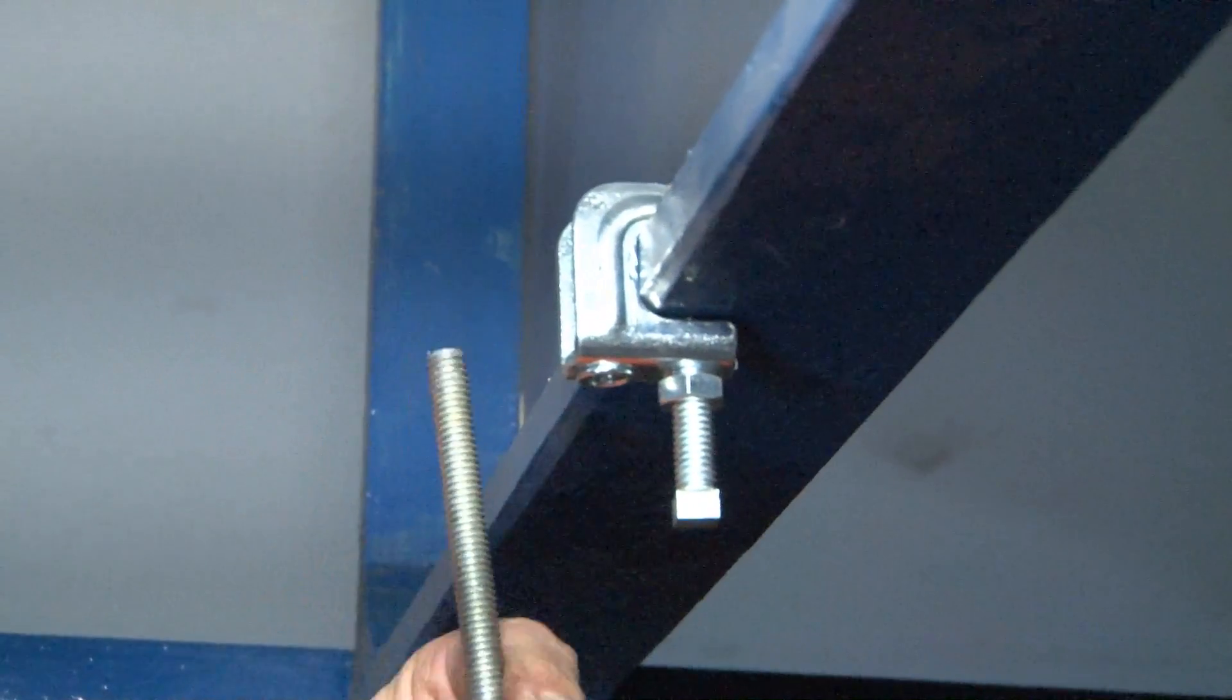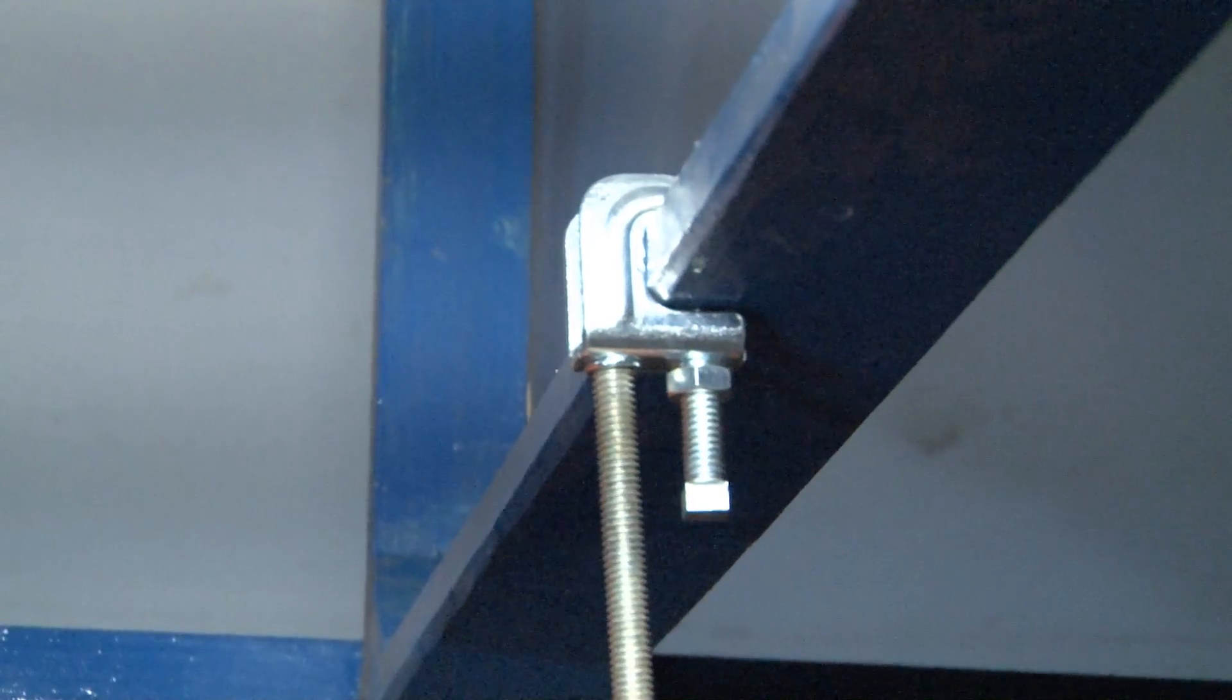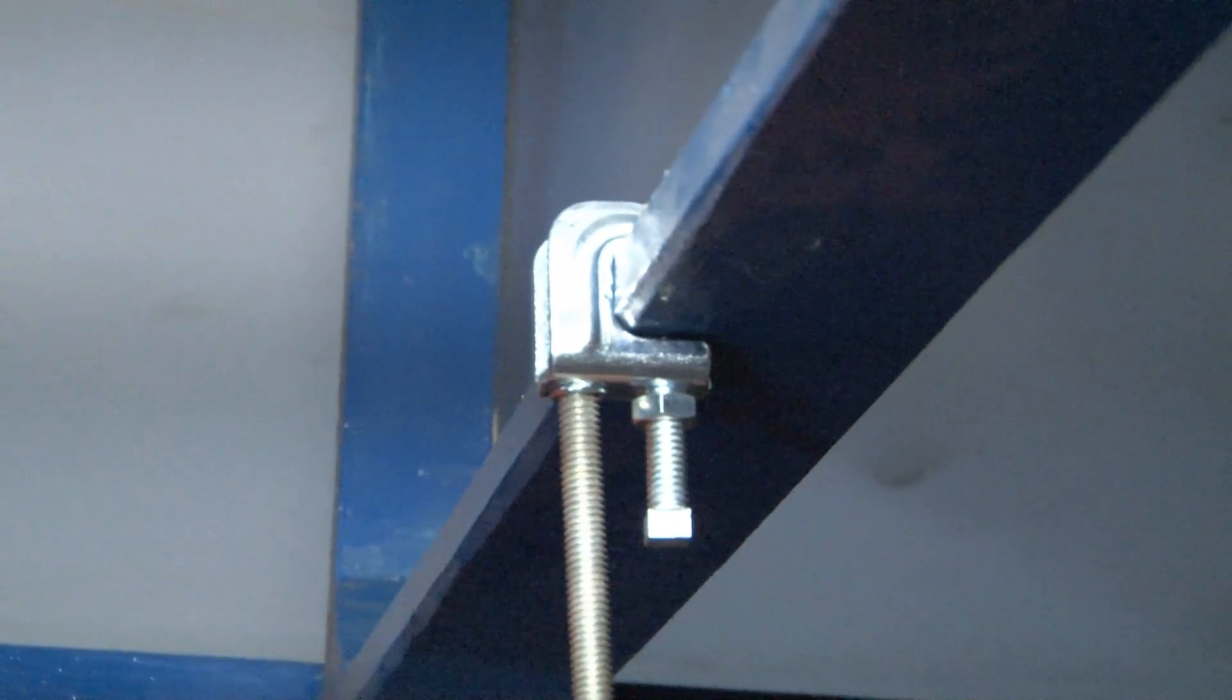At this point, you can take your threaded rod and align it with the threads on the beam clamp and simply screw it into place.